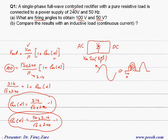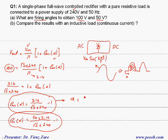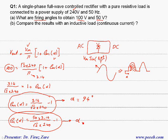The firing angle for 100 volts is approximately 94 degrees. And to get 50 volts, the firing angle is approximately 122 degrees.